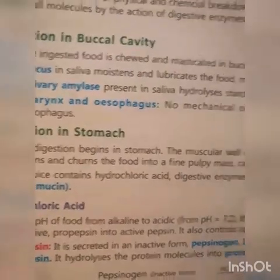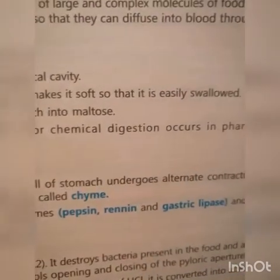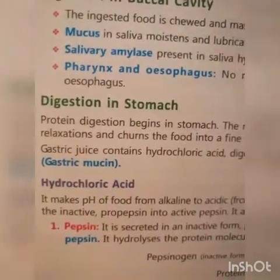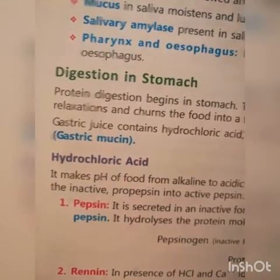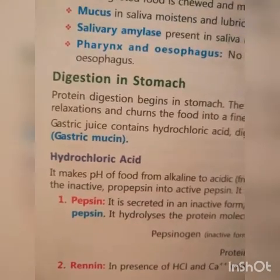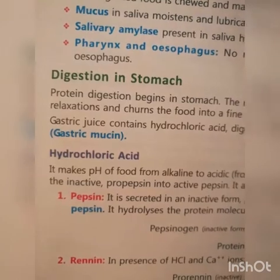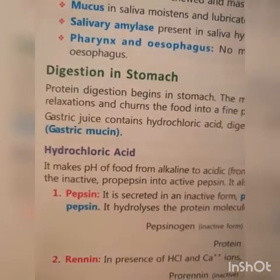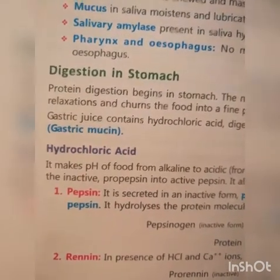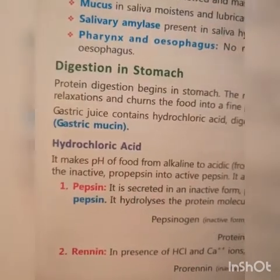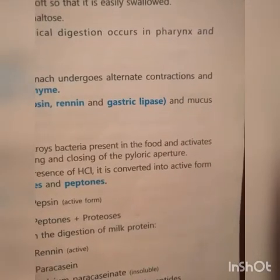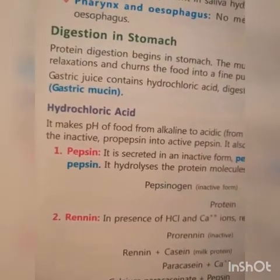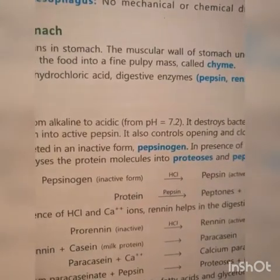Pharynx and oesophagus: No mechanical or chemical digestion occurs in the pharynx and oesophagus. Digestion in the stomach: Protein is mainly digested in the stomach. Protein digestion begins in the stomach. The muscular wall of the stomach undergoes alternate contraction and relaxation and churns the food into a fine, pulpy mass called chyme.